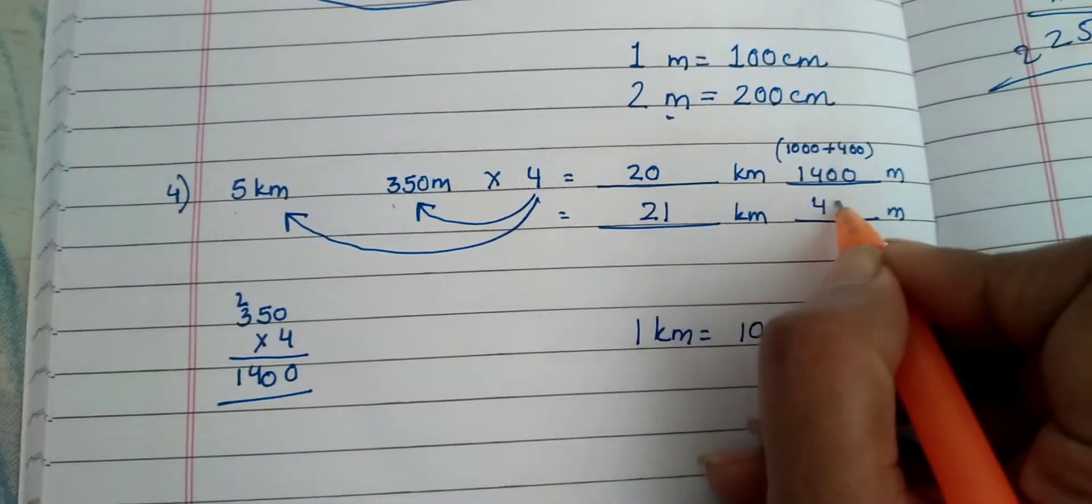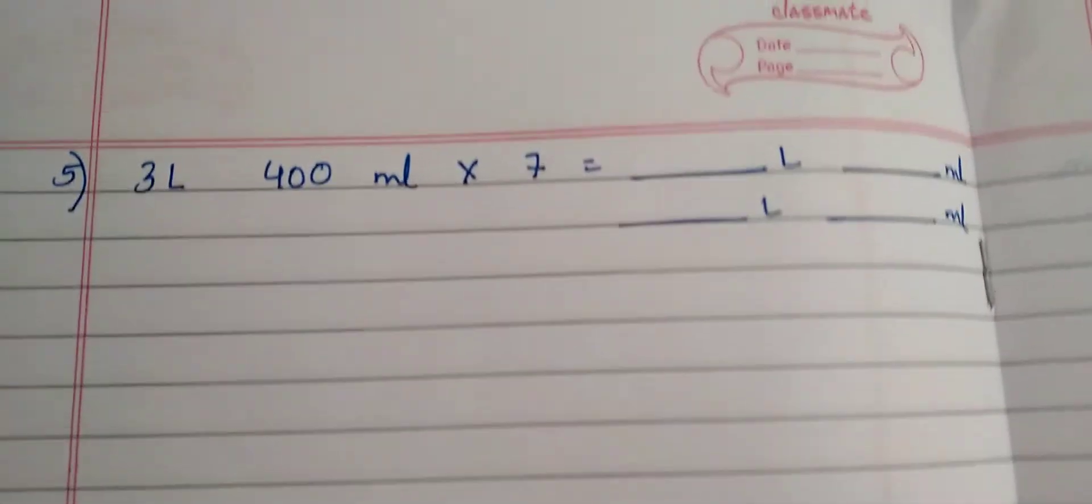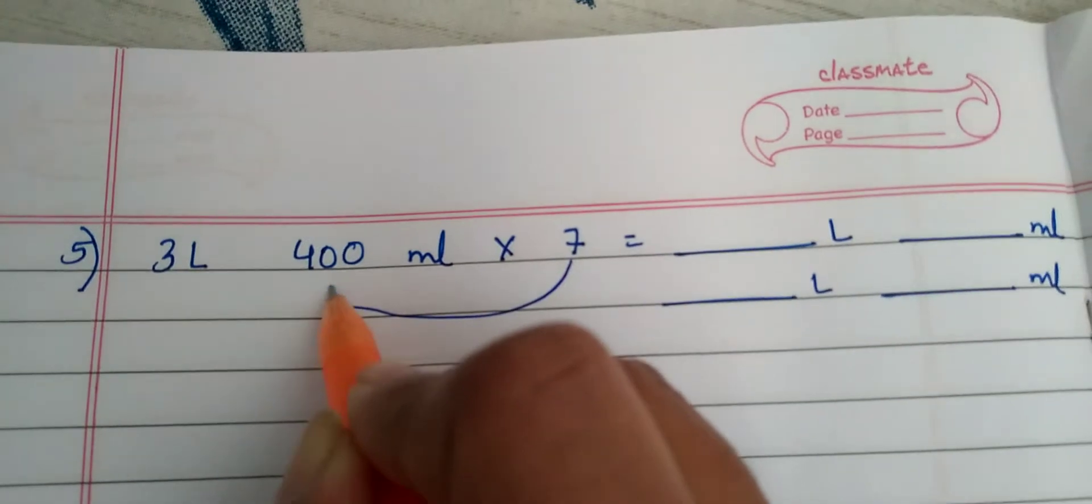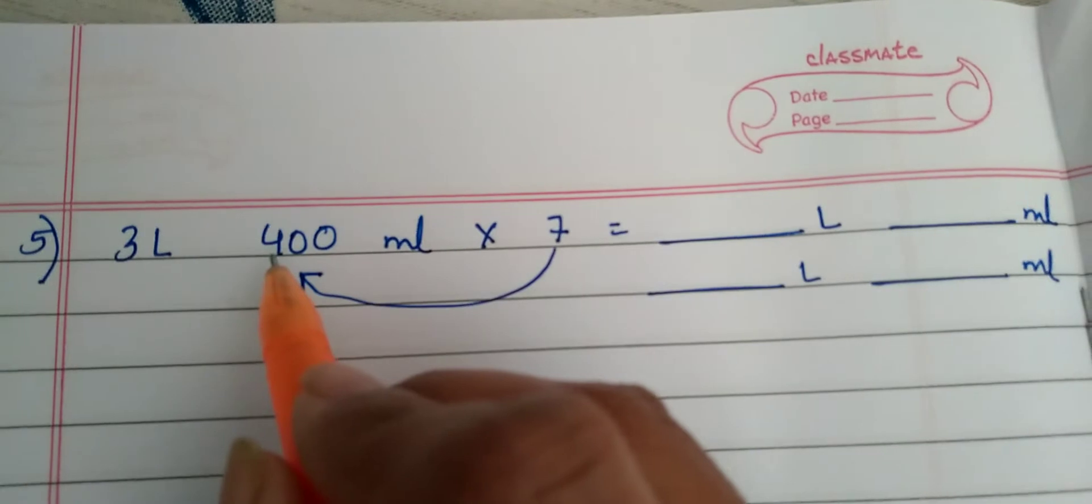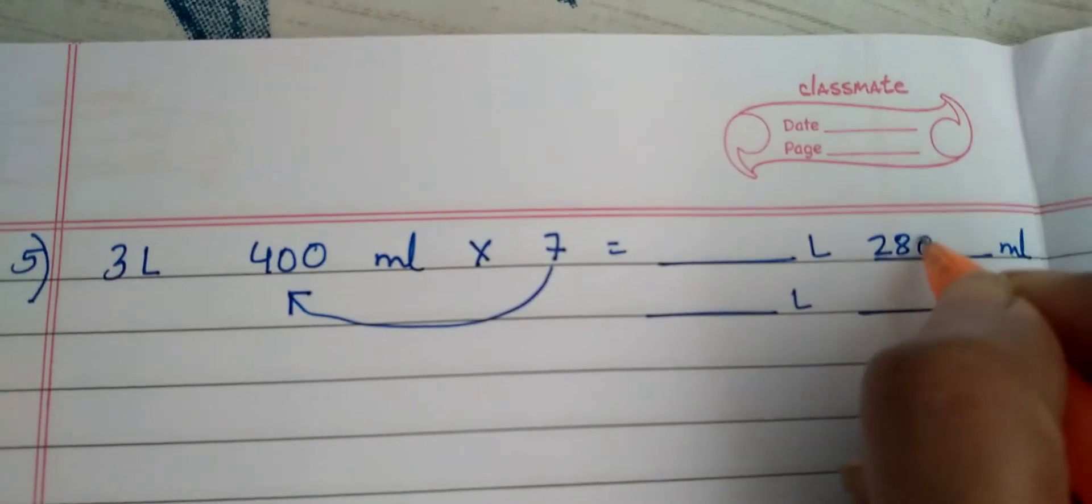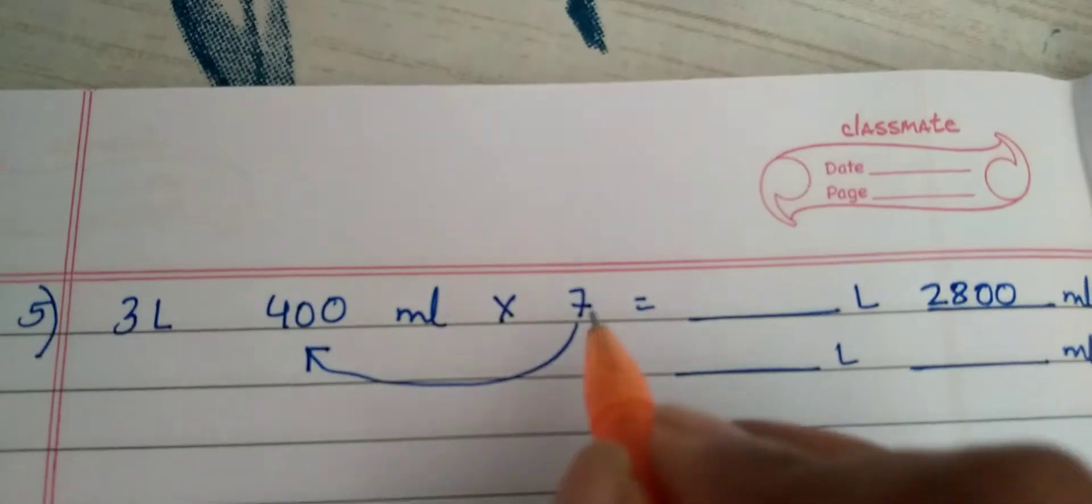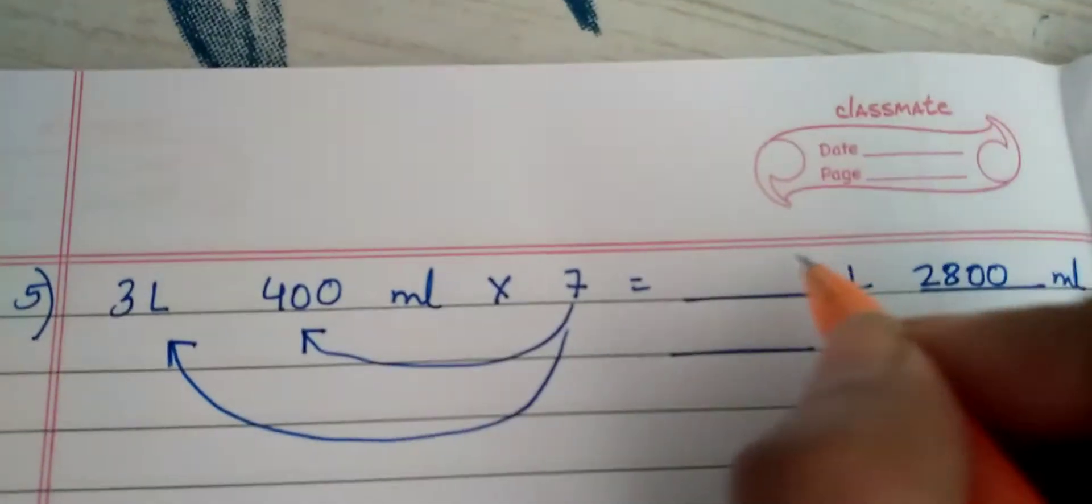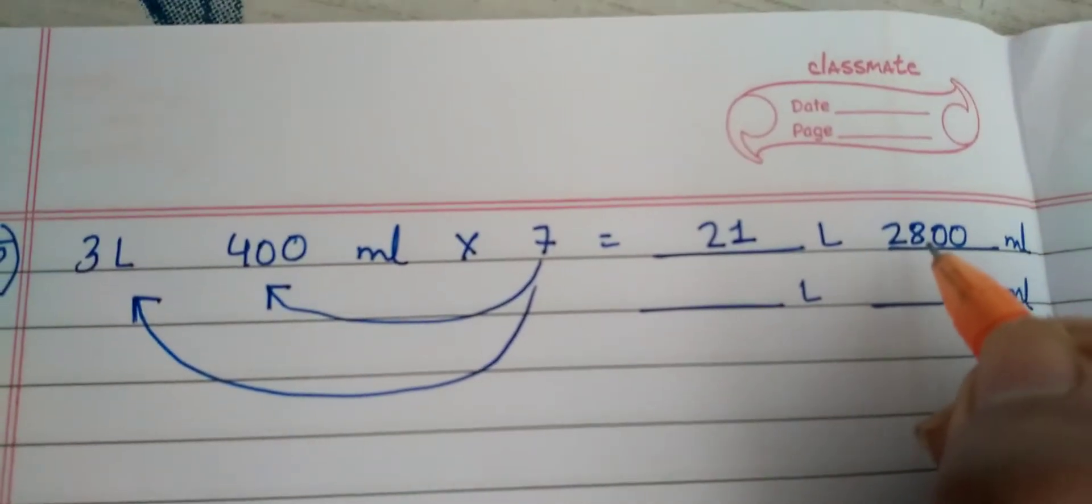Okay, this is your last question. Now 7 will be first multiplied by 400 milliliter. 400 into 7, 7 into 4 is 28 and two zeros. So when you multiply you'll get 28 and two zeros, that is 2800 milliliter. Now you multiply 7 by 3. 7 into 3 is 21.